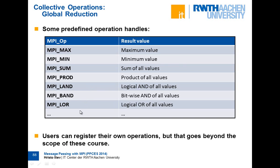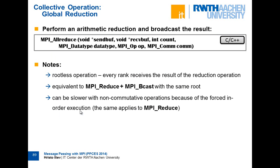You can also register your own reduction operation by writing a function that operates on the data and registering it as a reduction operator for use in MPI_Reduce. There is also a rootless version called MPI_Allreduce, where there is no root — all processes receive the result of the reduction. It is equivalent to MPI_Reduce followed by a broadcast, but more efficient.